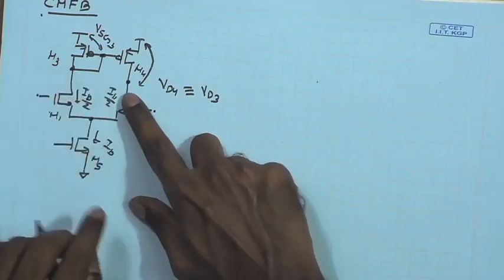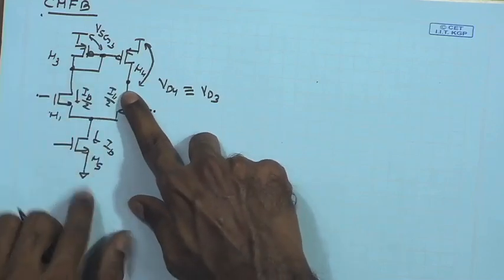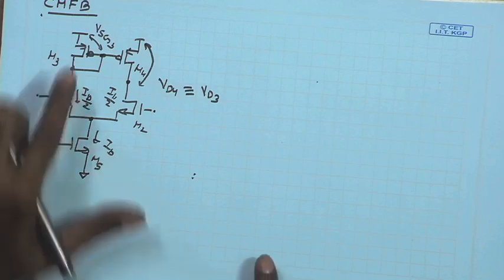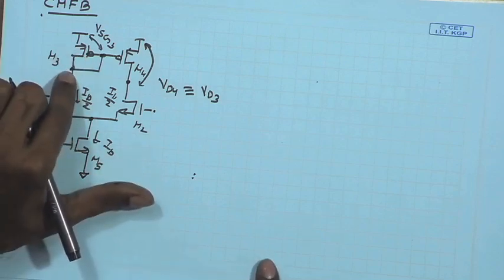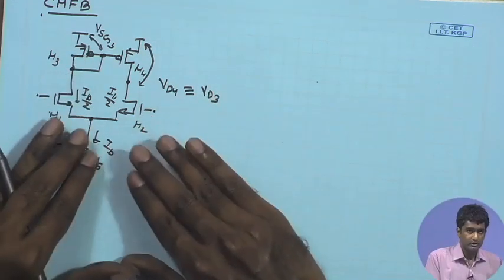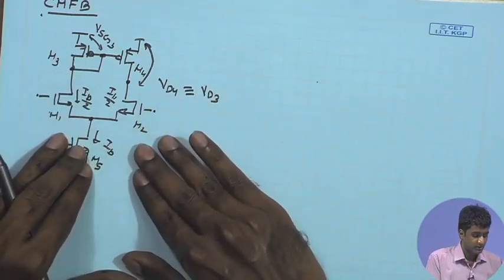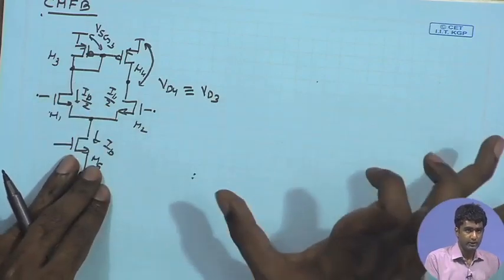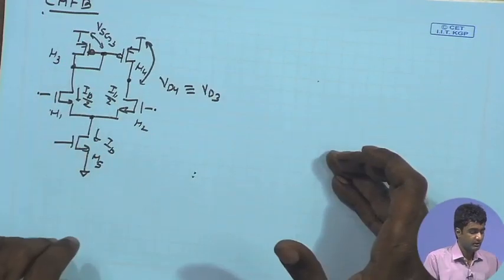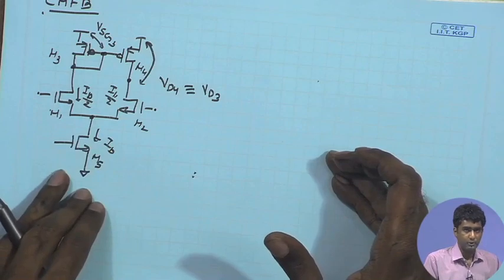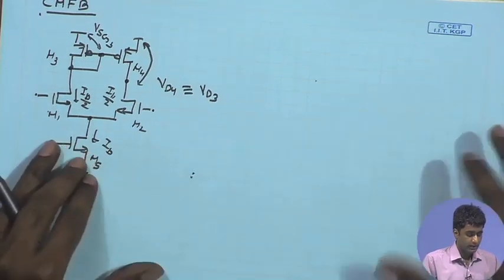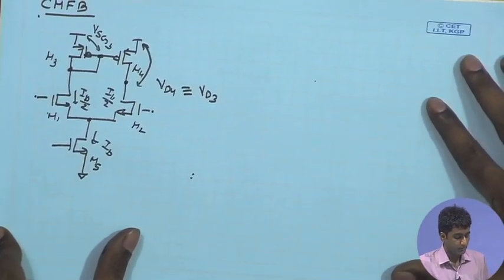So the differential amplifier with current mirror load is self-biasing: it provides a well-defined output DC point equal to the V_sg of M3. Therefore we can use the differential amplifier with current mirror load to bias our fully differential amplifier, which does not have a well-defined DC bias point. Let us look at the overall solution we are going to apply.